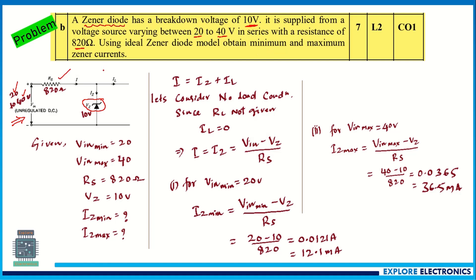We need to find Iz minimum and Iz maximum. Since there is no load resistance given, we neglect IL, so I equals Iz. We write Iz = (Vin − Vz) / Rs. For Vin minimum = 20 volts: (20 − 10) / 820 gives 12.1 milliamps as the minimum current flowing through the zener diode.